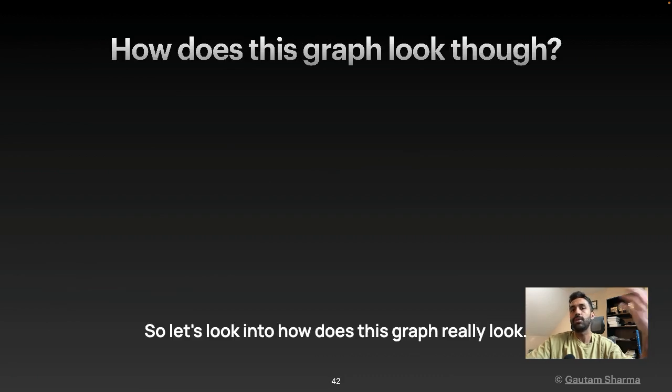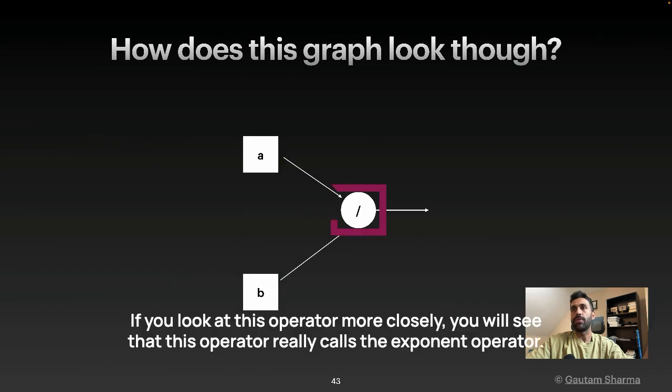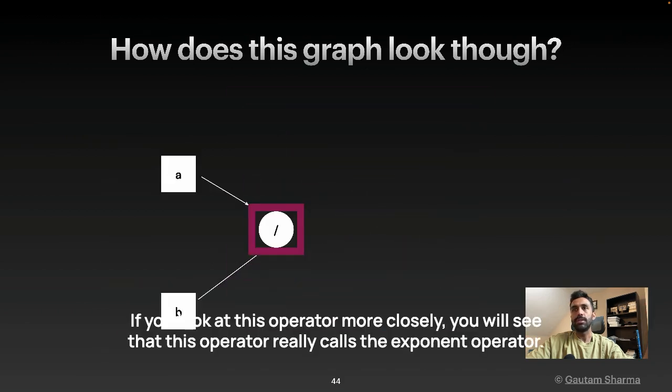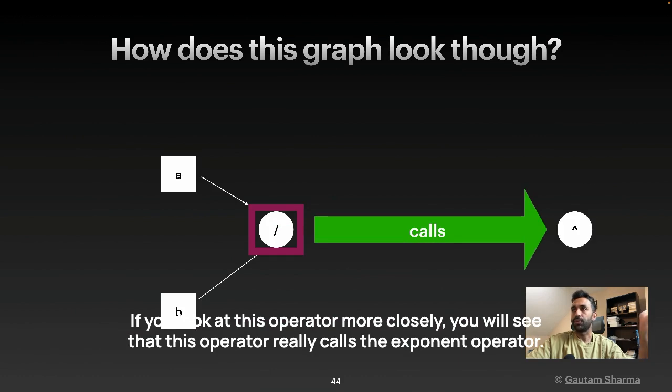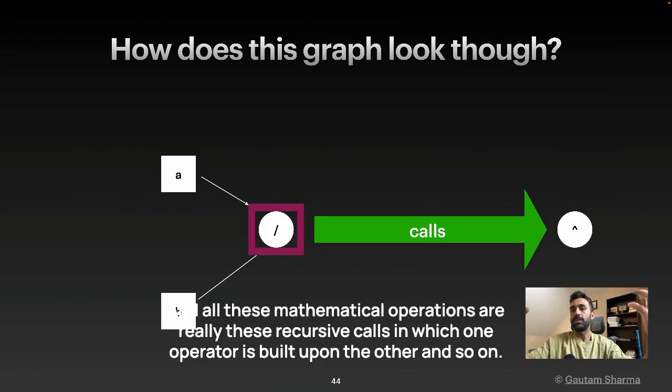So let's look into how does this graph really look. So it's a normal graph A divided by B gives C. If you look at this operator more closely, you will see that this operator really calls the exponent operator. And all these mathematical operations are really these recursive calls in which one operator is built upon the other and so on.